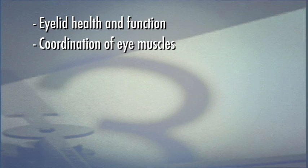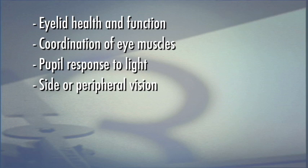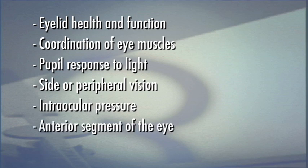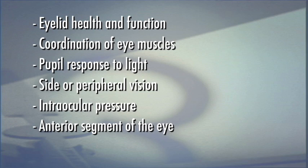In additional tests, an ophthalmologist will examine eyelid health and function, coordination of eye muscles, pupil response to light, side or peripheral vision, intraocular pressure (the pressure inside the eye), the anterior segment of the eye (the area in front of the lens, including the cornea and iris), and the interior and back of the eye, including the retina.